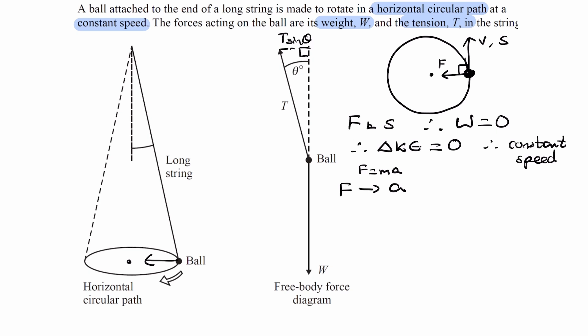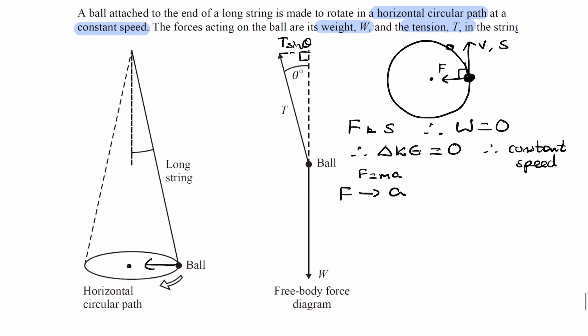We could also approach it from the velocity perspective. So we know that the direction of velocity is constantly changing. The velocity is this way to begin with, again as viewed from above. A second later it's going to be over here, and then it's going to be over here, and so on. So the direction of velocity is changing. Even though it's moving at a constant speed, velocity is a vector.